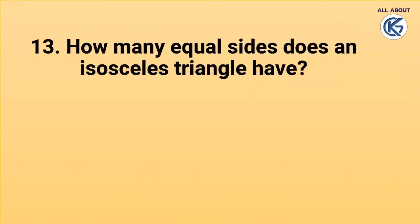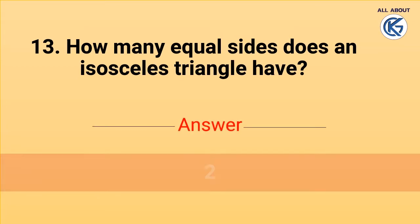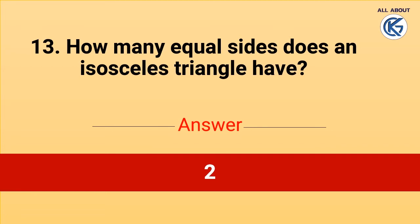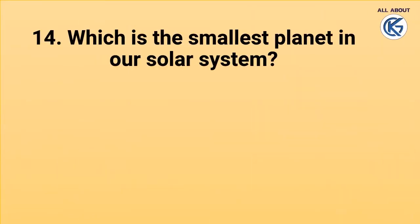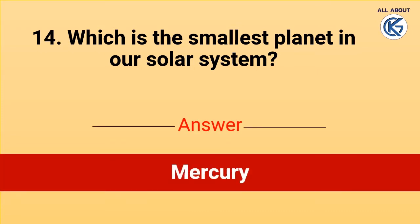How many equal sides does an isosceles triangle have? Two. Which is the smallest planet in our solar system? Mercury.